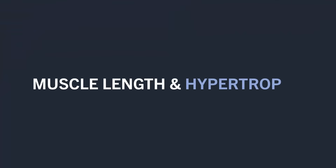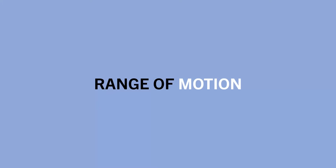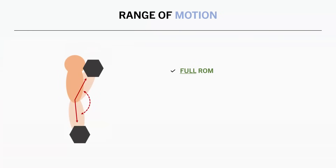Now that we have discussed what muscle length is and how it is manipulated with different resistance training variables, the real question is: how does muscle length impact muscle growth? Let's look at how muscle length impacts hypertrophy from each individual variable. First, let's look at range of motion. We tend to find that achieving longer muscle lengths via a larger range of motion is generally more effective than cutting range of motion short. For example, this study compared the effects of squat training to either full depth or partial depth on lower body muscle growth.